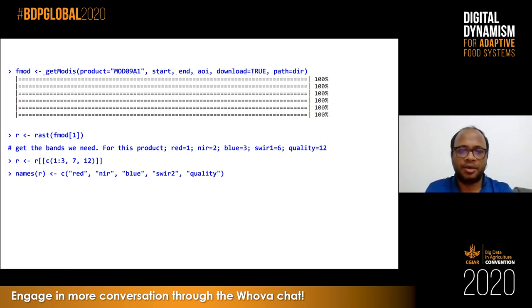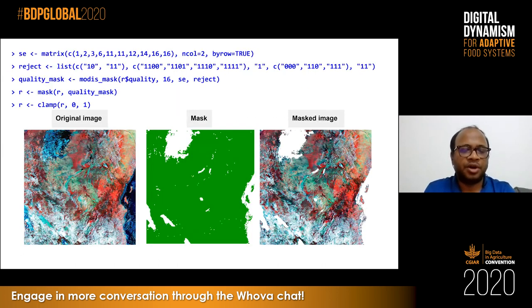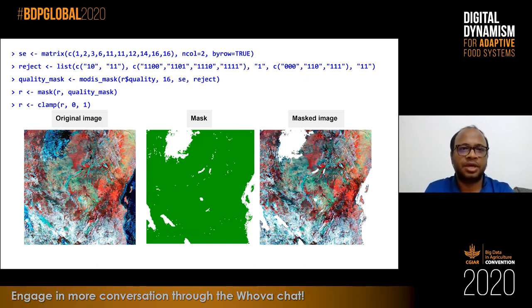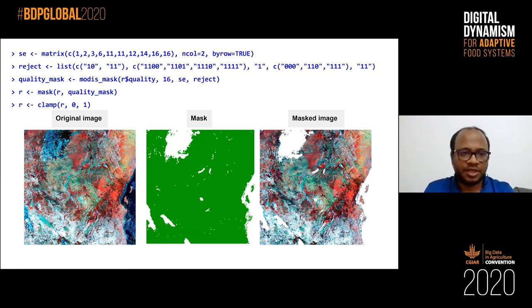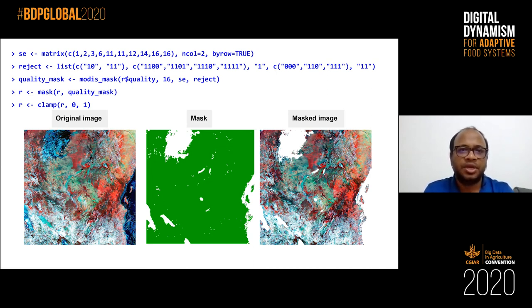Let's say we are trying to compute a vegetation index. How does it look? On the left-hand side we have the original image with no masking — there are a lot of blue pixels coming mostly from clouds. What we need to do is create a quality mask based on the quality band. This requires some remote sensing background to understand how these products work. The quality band comes as a bitmask, so you have to know how to translate the bitmask into an actual usable dataset.